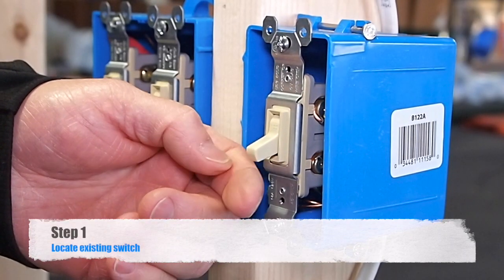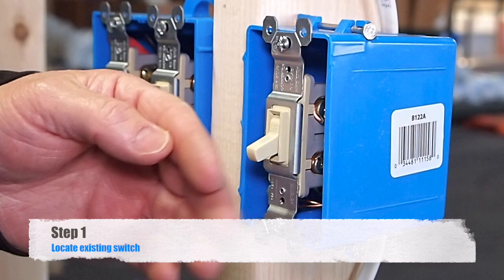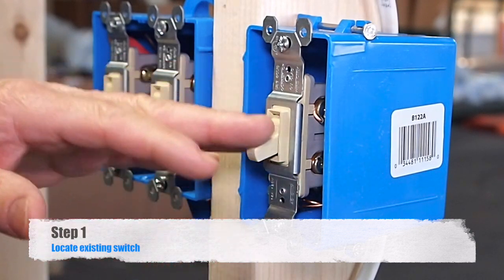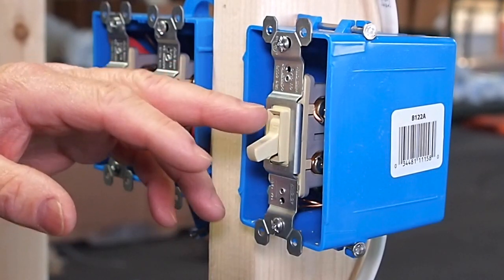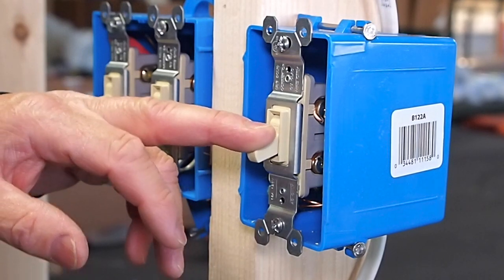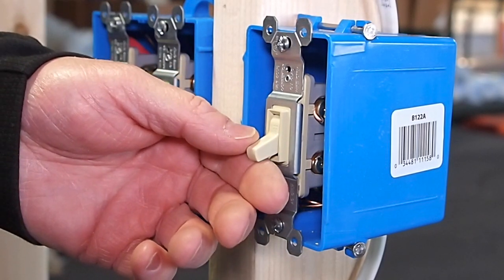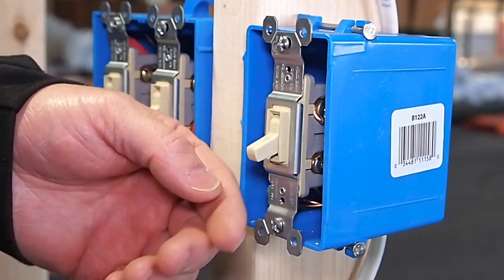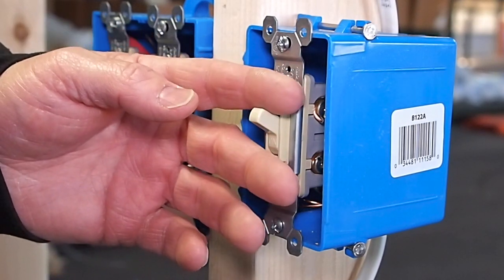We are at the old switch that ran the fan and light up there at the same time. In this case, we are not going to do any rewiring in the box. We are going to leave this switch and then the wire going to the attic up to that fan. We are going to take it directly to the light and use that to switch the light on and off.